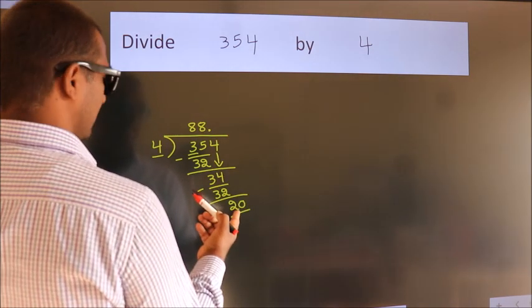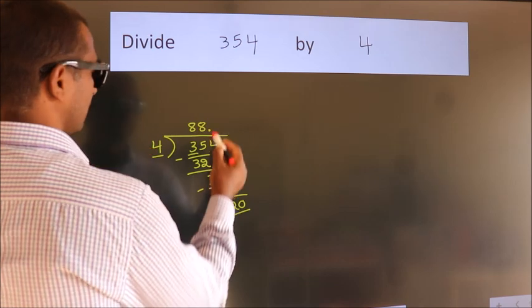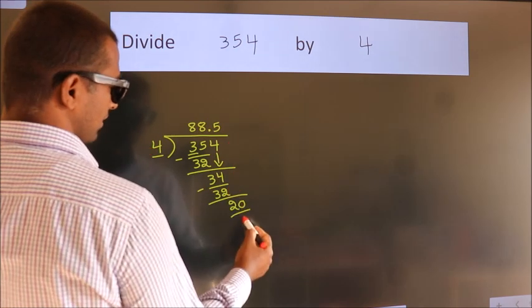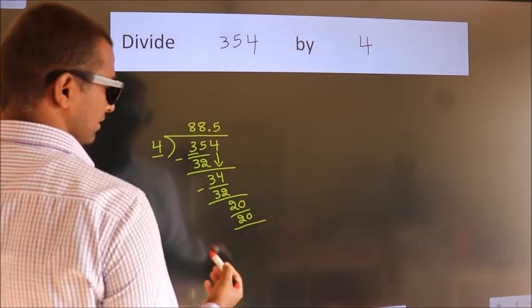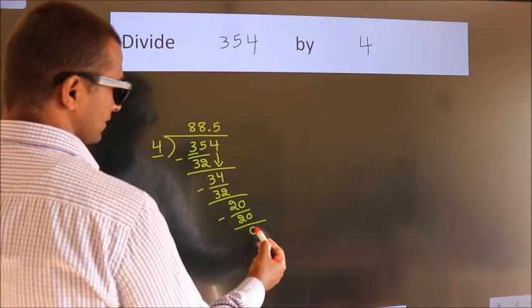When do we get 20 in 4 table? 4 times 5 equals 20. Now we subtract. We get 0.